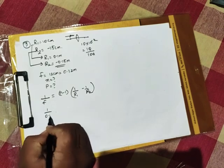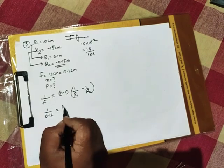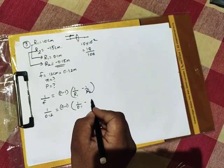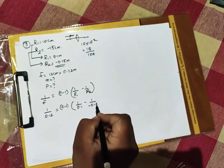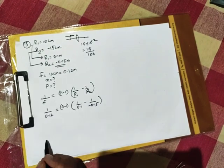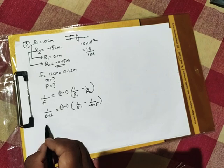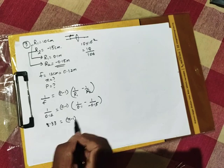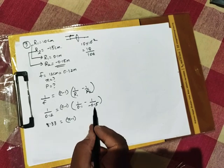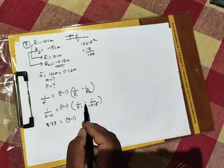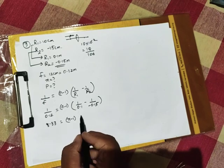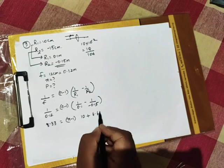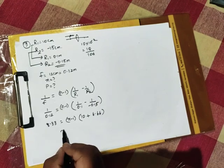So, 1 by 0.12, just substitute n minus 1, 1 by 0.1 minus of 1 by minus 0.15. I hope now you are understanding minus ka kya kaam ho raha hai. 1 by 0.12 is 8.33 equals n minus 1. Minus minus plus ho jaega. 1 by 0.1 and 1 by 0.15 in your calculator. So 10 plus 6.66, solve that.